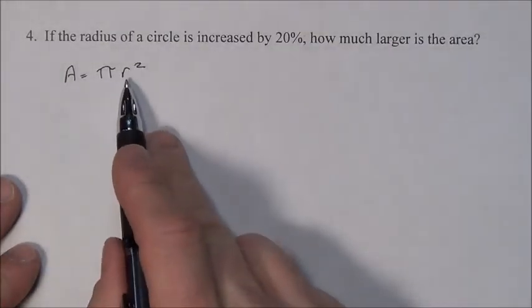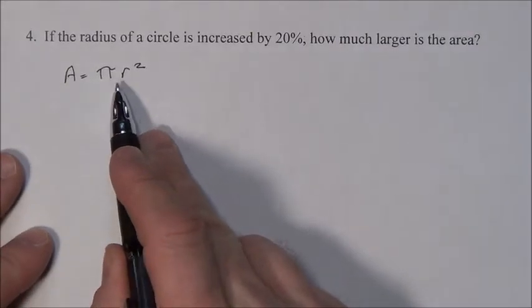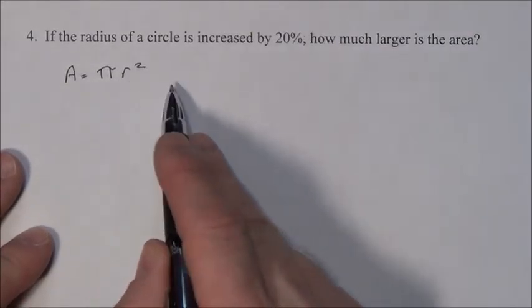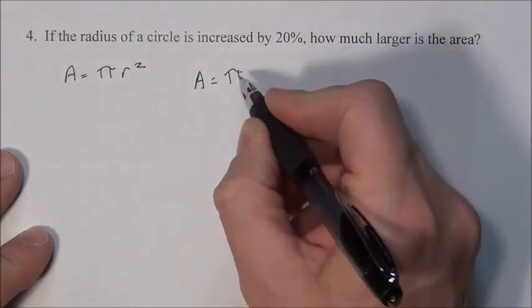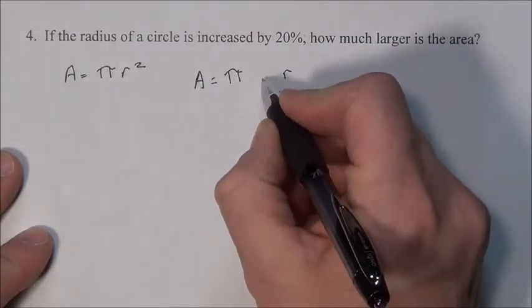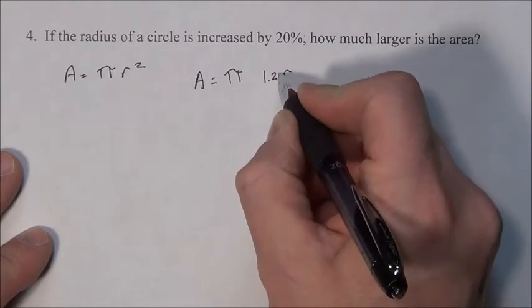Now, we're going to increase that radius by 20%, so it's going to be all of it plus an extra 20%. That means you're taking the radius and multiplying it by 1.20.